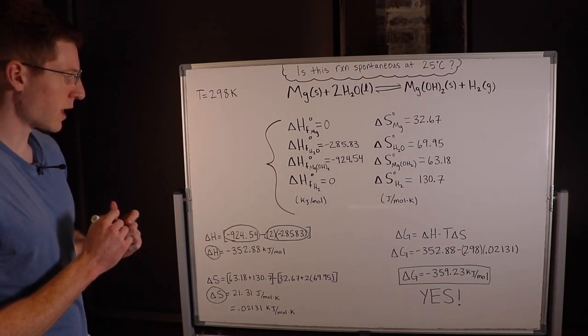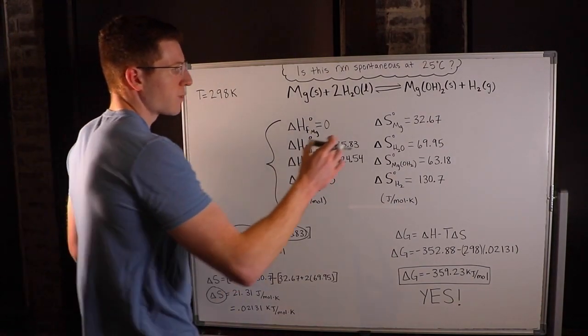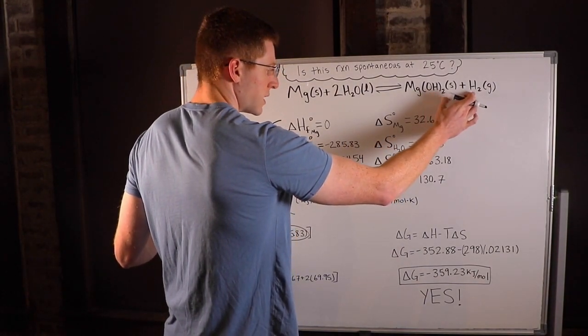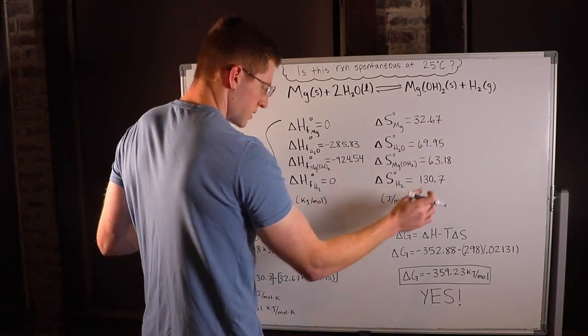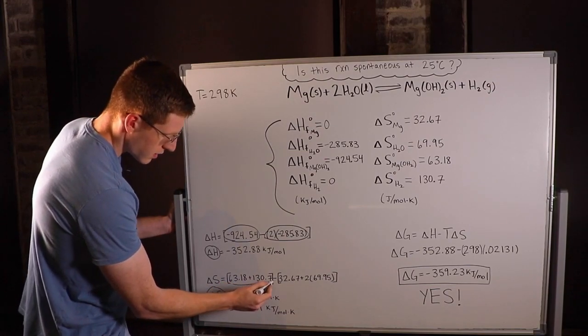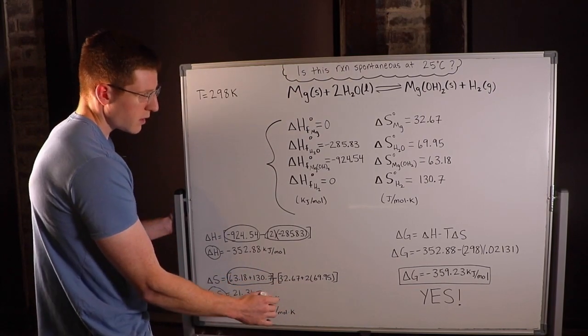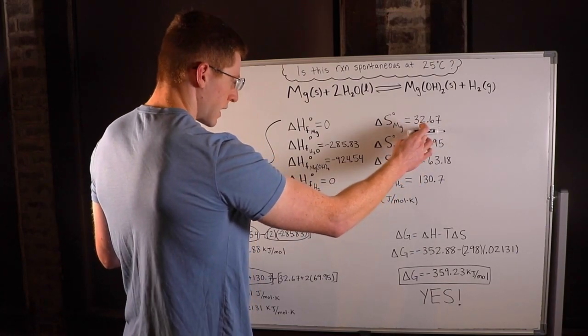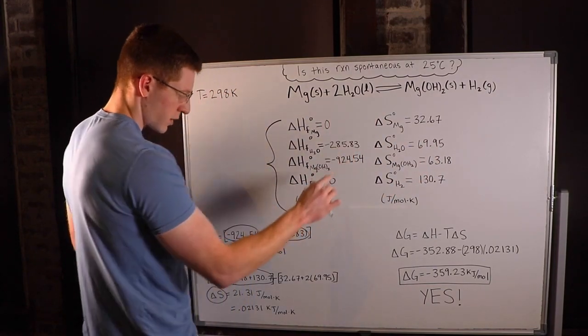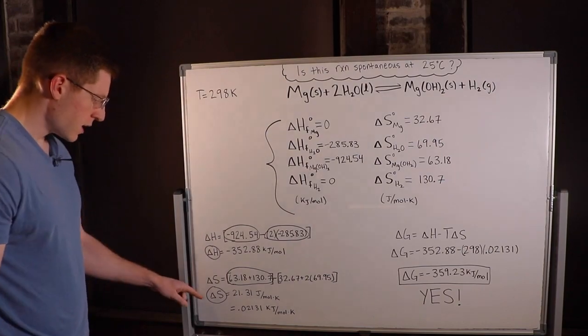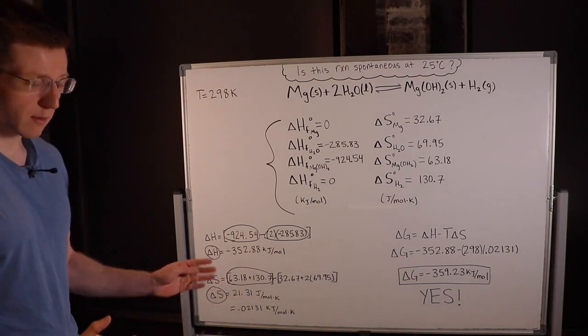We do the same for entropy with different values. Adding all entropies of products: for H2, that's 130.7, and for magnesium hydroxide, 63.18. Then we subtract the reactant entropy sum: 32.67 plus two times 69.95 for two moles of water. Overall, this gives us an entropy of 21.31 joules per mole times Kelvin, the typical units for entropy.